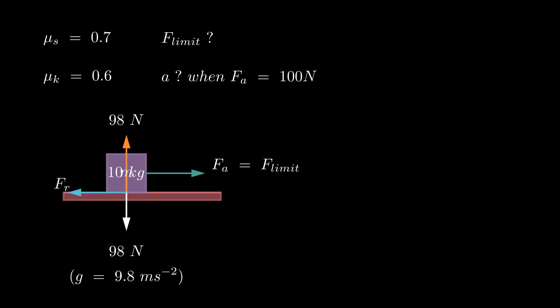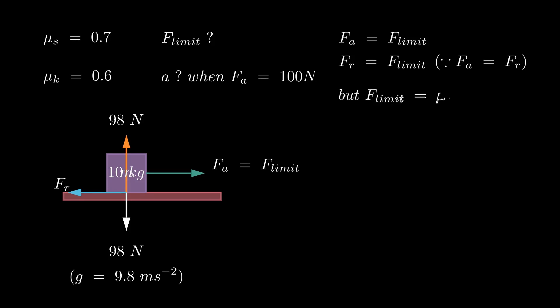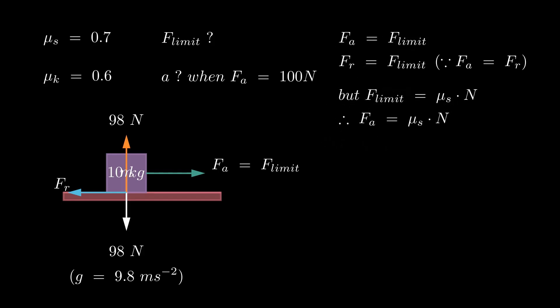We understand that the object initiates motion when the applied force equals the limiting frictional force. The limiting frictional force is equivalent to the frictional force just as the object is on the brink of movement. The connection between the limiting frictional force and the normal force is described by this expression. Because the object is currently stationary, we use the coefficient of static friction in this equation. Now we will substitute the given coefficient of static friction value and the calculated normal force value into this equation to ascertain the force required to exceed friction. This force represents the limiting force of friction.